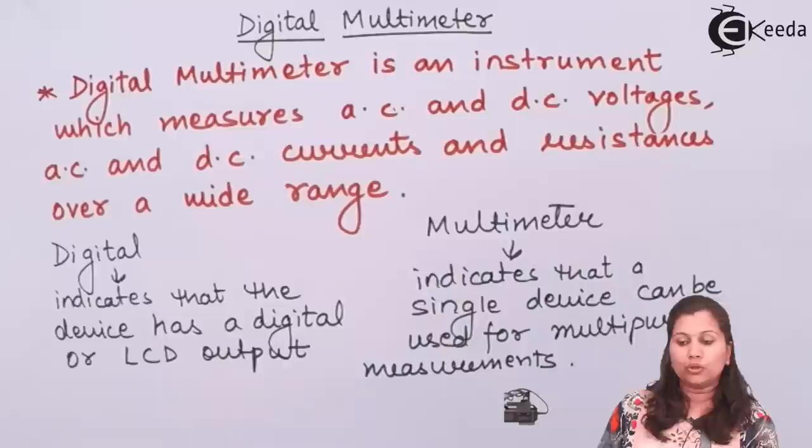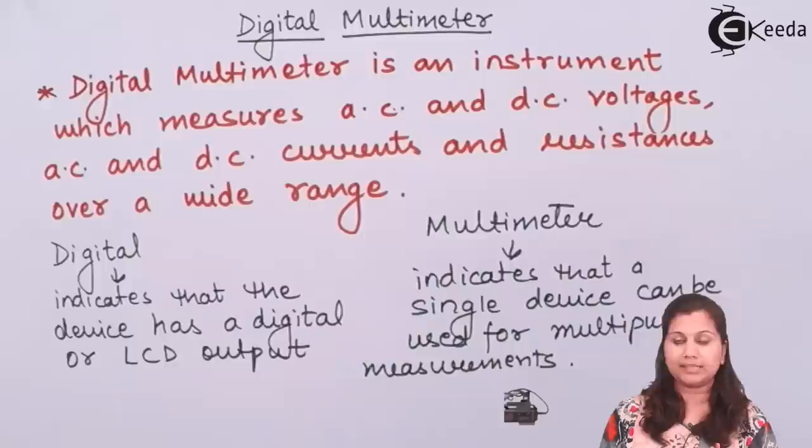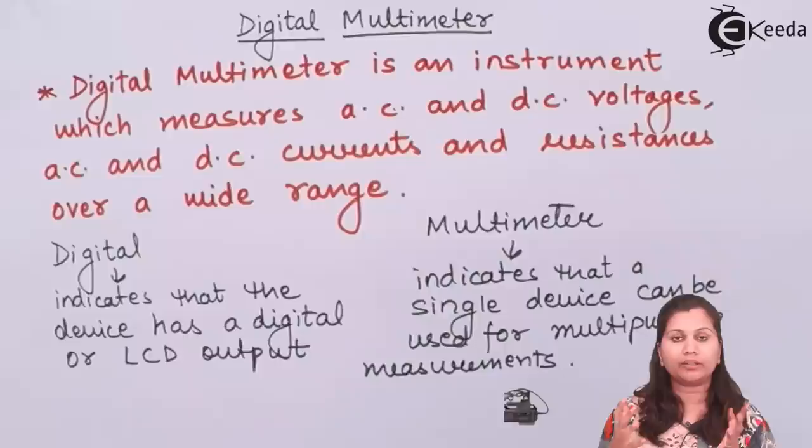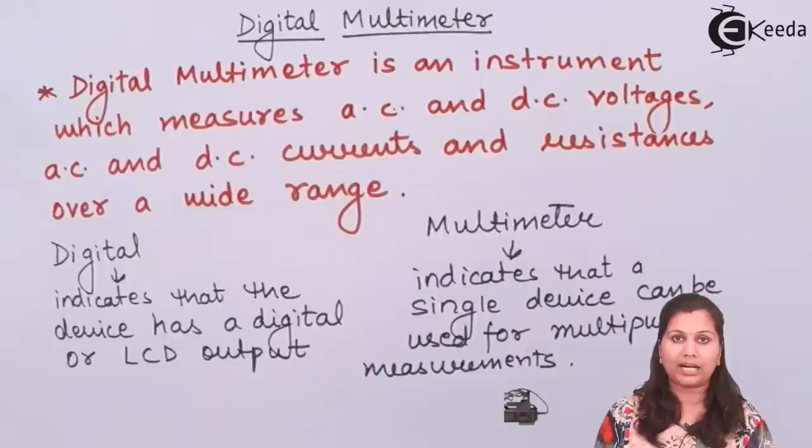So when we combine these two terms, digital multimeter means it is a device — an instrument which is going to measure various parameters. It can measure one or more parameters and it is going to give the value of that parameter in the form of a digital output, displayed on the LCD screen.